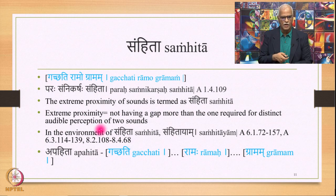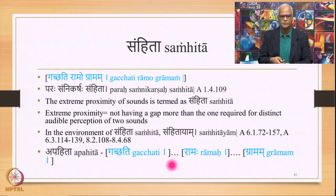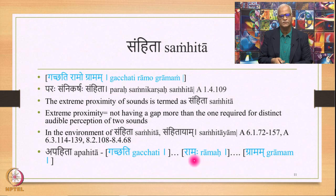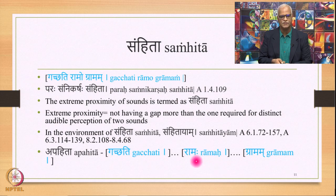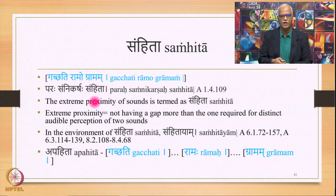That would be called Apahita or Vyavahita, as in the case of the word Gacchati where you take a pause — more gap than what is required for distinct audible perception — then you utter Ramaha, and then still some more gap, then you utter Gramam. When you do this, the form and shape of the sounds also changes. For example, here you have Ramo, but here we will have Ramaha. The euphonic combination effects are missing. When this word Ramaha goes into Samhita — uttering Gramam with close proximity without additional gaps — this shape Ramaha turns into Ramo. That is the effect of Samhita.